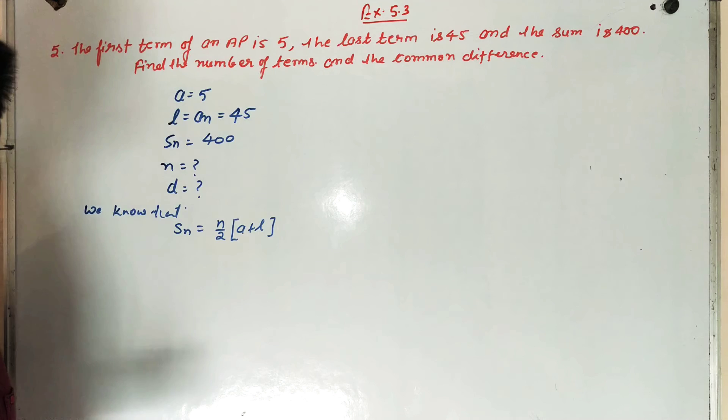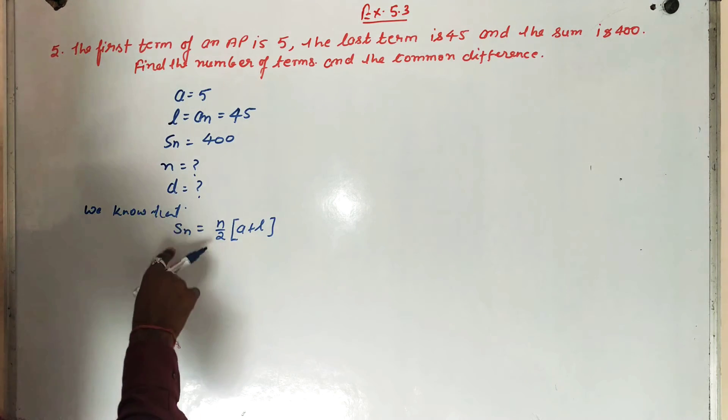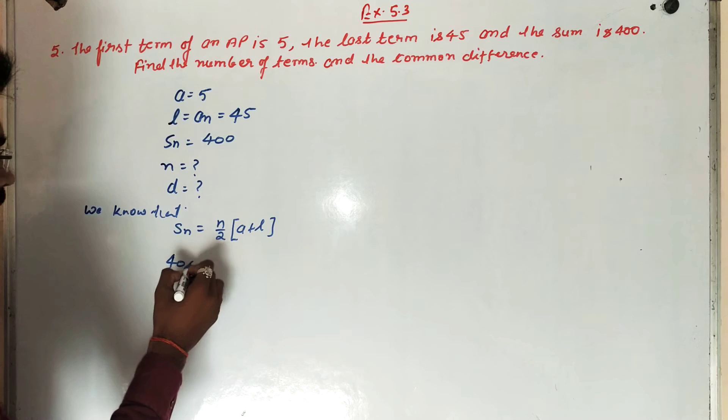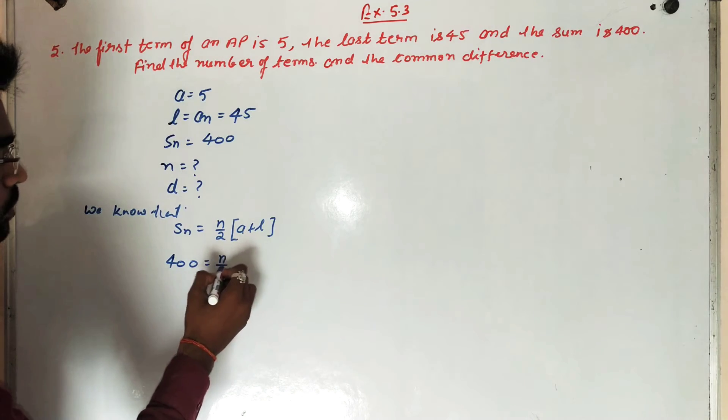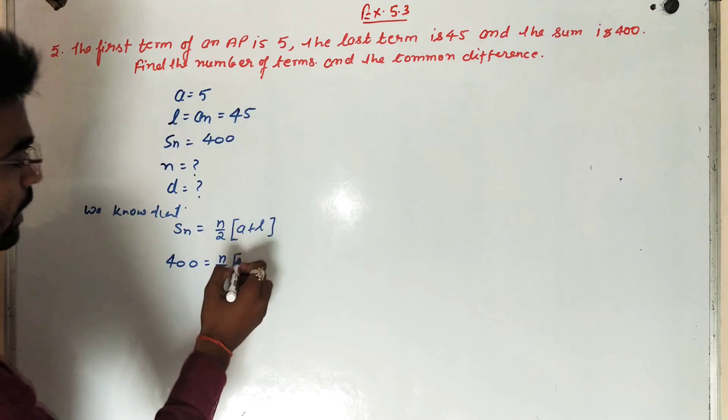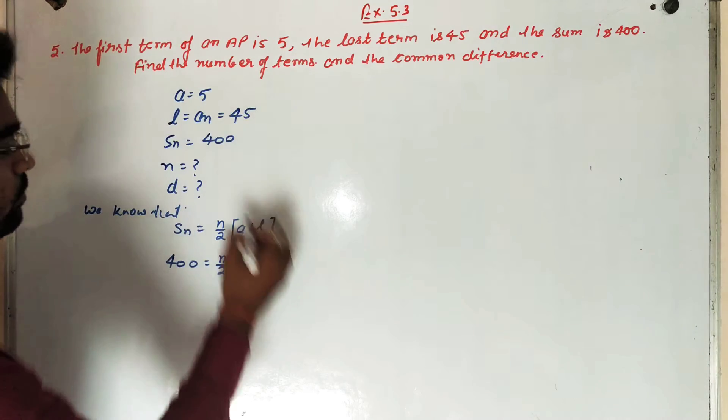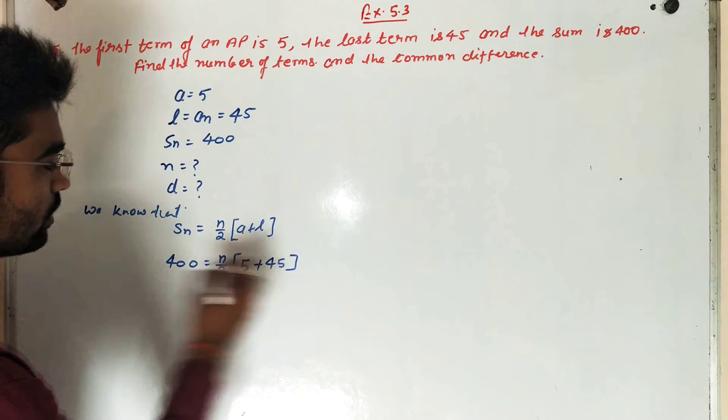SN is equal to N upon 2 into A plus L. And SN is equal to 400 equals N upon 2, first term A is 5, last term L is 45.